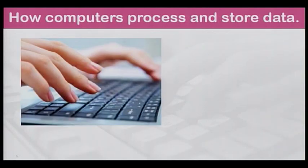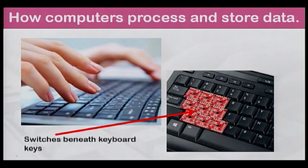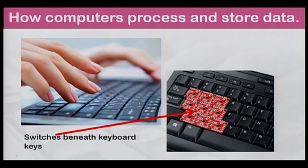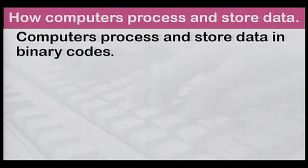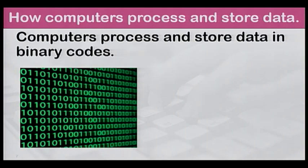When you push keys on the keyboard, you close the switch beneath the key. This information about which switch was closed is digitized and turned into binary code and sent to the computer for processing. Computers process and store data in binary codes, that is, using zeros and ones.